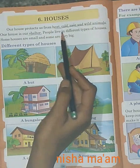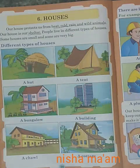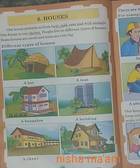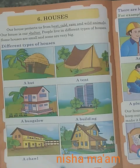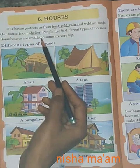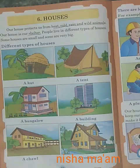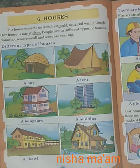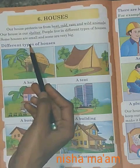People live in different types of houses. बहुत सारे लोग इस दुनिया में हैं, और सब लोग अलग-अलग घर में रहते हैं। There are many different types of houses. Some houses are small and some are very big. कुछ घर एकदम छोटे होते हैं, और कुछ घर एकदम बहुत बड़े होते हैं, बंगलो जैसे।